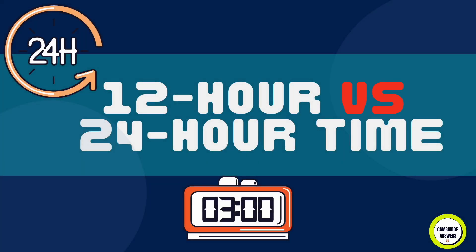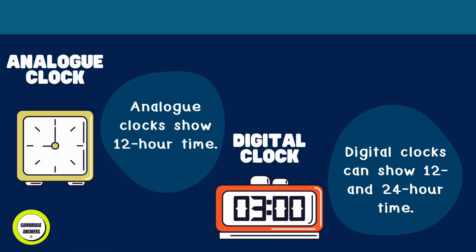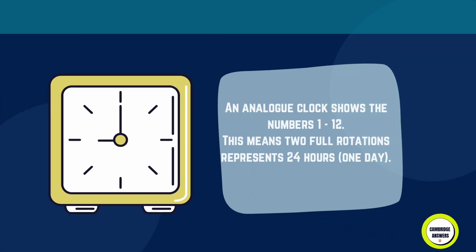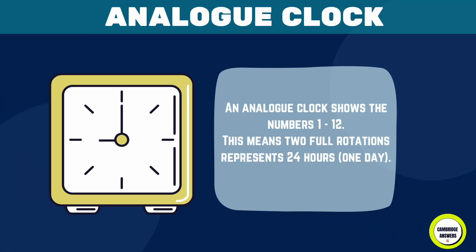12-hour versus 24-hour time: types of clocks. Analog clocks show 12-hour time. Digital clocks can show both 12 and 24-hour time. An analog clock shows the numbers 1 to 12, which means two full rotations represents 24 hours.